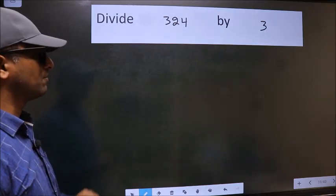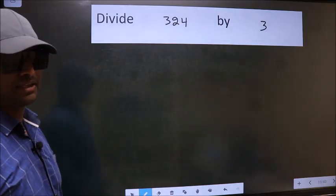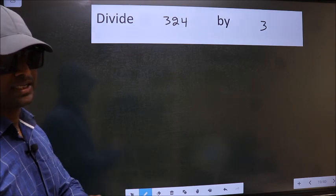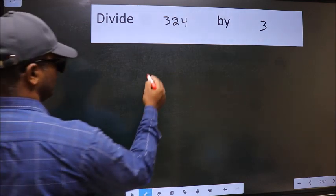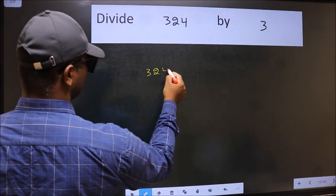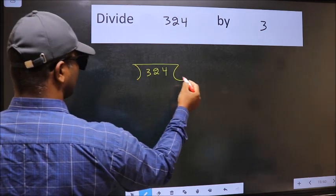Divide 324 by 3. To do this division, we should frame it in this way. 324 here, 3 here.